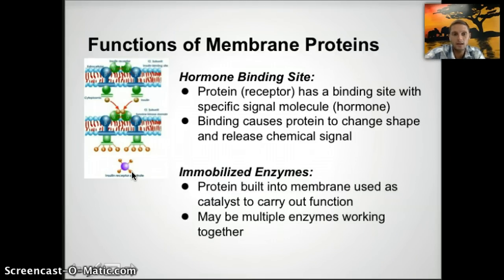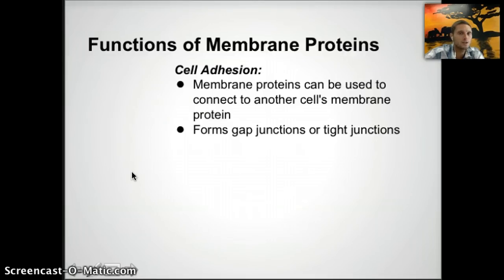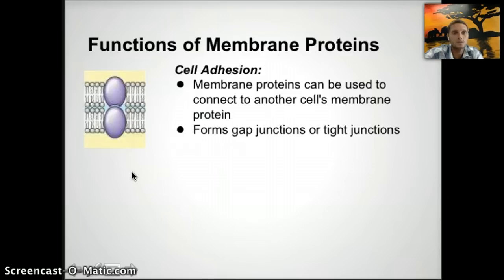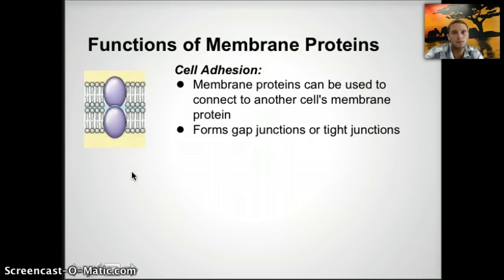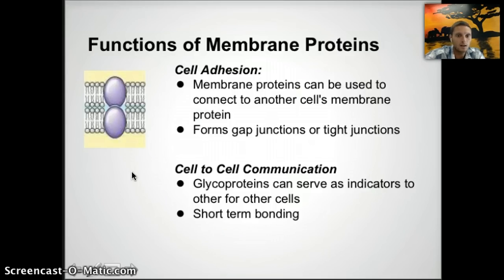Immobilized enzymes are proteins built into the membrane and used as catalysts to carry out a function; multiple enzymes may work together. Another function is cell adhesion — cells sometimes need to stick together, so membrane proteins can connect to another cell's membrane, forming gap junctions or tight junctions. Cell-to-cell communication, specifically with glycoproteins, can serve as indicators for other cells and sometimes enable short-term bonding.